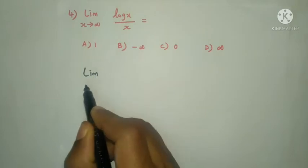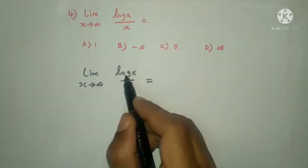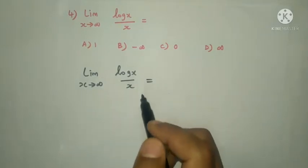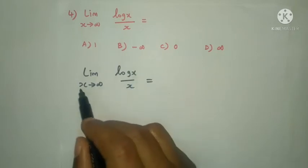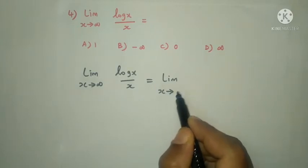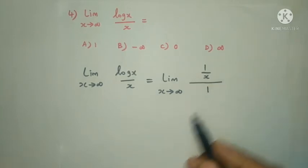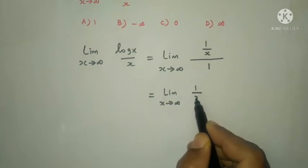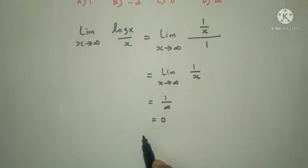For the solution, limit x tends to infinity of log x divided by x. Applying L'Hospital's rule, differentiate numerator: derivative of log x is 1/x. Derivative of denominator x is 1. So the limit becomes limit x tends to infinity of 1/x. As x tends to infinity, 1/infinity = 0. The answer is Option C: 0.